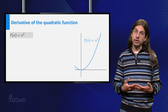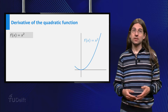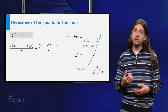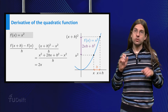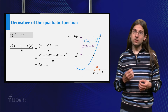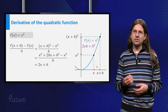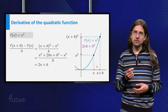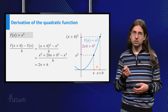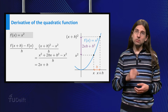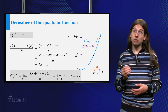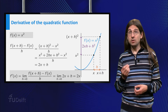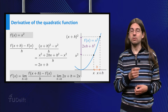A more interesting function is f equals x squared. Expanding x plus h squared and including the double cross term gives that the difference quotient equals 2x plus h. Letting h go to zero, we see that the result is just 2x. Thus the derivative of x squared equals 2x.